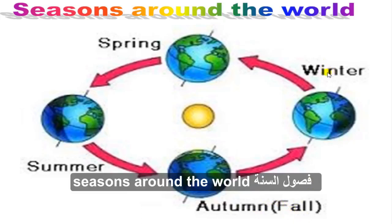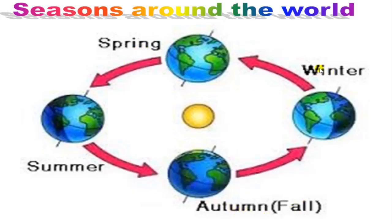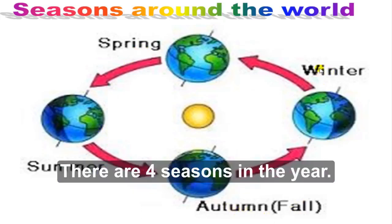How many seasons? Four seasons: spring, summer, autumn or fall, and winter. There are four seasons in the year.